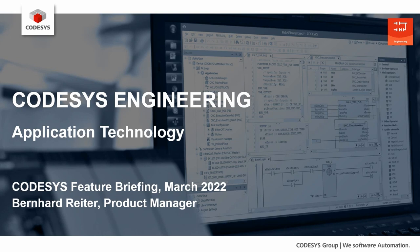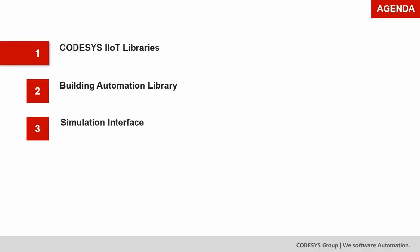In this presentation, I want to show you the new features released in the application technology libraries over the course of the last year, and also give an outlook on features still coming. First I want to talk about new features in the IIoT libraries of CodeSys, then introduce the new building automation library with its first release in the summer, and finally talk about a new simulation interface to allow better integration between CodeSys and simulation tools.